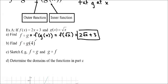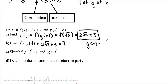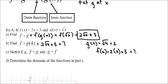To find f of g of 4, we substitute — wherever we see x, we put 4 in there. So this is 2 root 4 plus 3, which is 2 times 2 plus 3, ending up being 7. Another way is to find g of 4 first: g of 4 equals root 4, which is 2. Then find f of 2: plug into our formula, 2 times 2 plus 3, 2x plus 3, which ends up being 7. So you could do it either way.